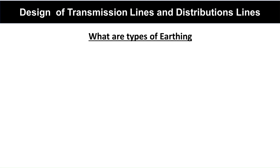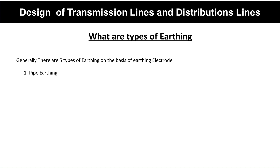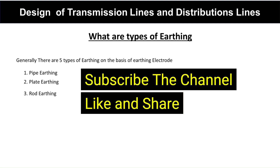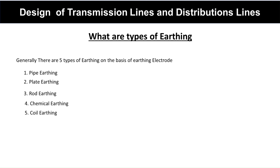There are generally five types of earthing based on the earthing electrode: number one, pipe earthing; number two, pallet earthing; number three, rod earthing; number four, chemical earthing; and number five, coil earthing. We will now see all these earthing types one by one.